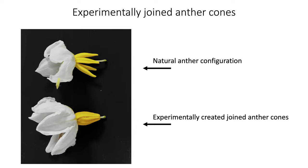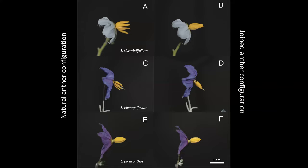Using these three species, we set up two experimental treatments. One maintained the natural anther configuration — in this case free anther architecture. The other experimentally created a joint anther cone by applying a small amount of water-based glue to the edge of each anther and holding them together until they dried, effectively producing a fused cone similar to that in dulcamara or tomato. For the natural anther configuration control, we also applied a little glue but in a different location, keeping the anthers free.